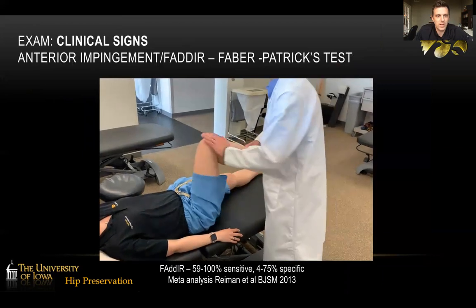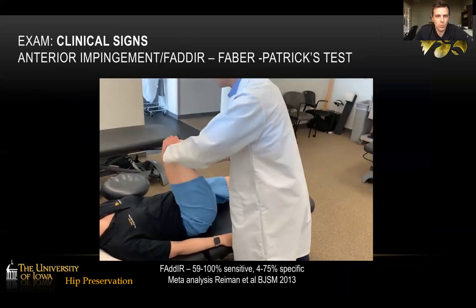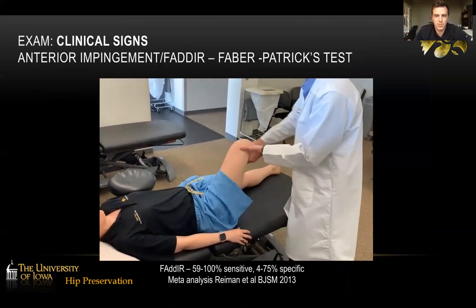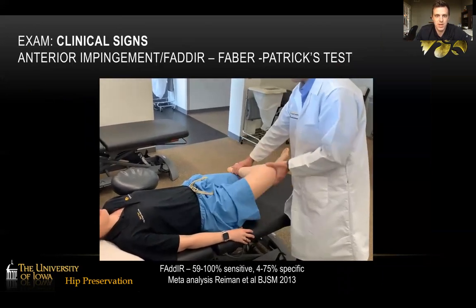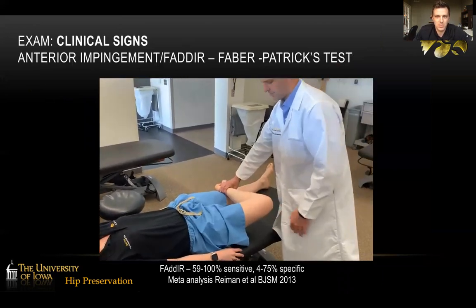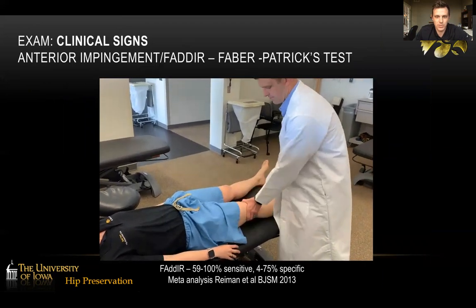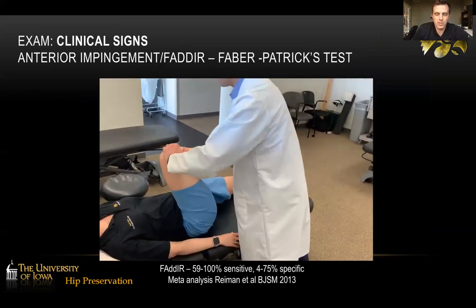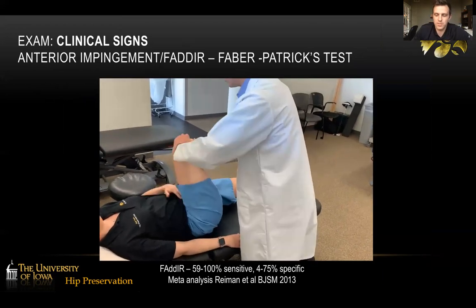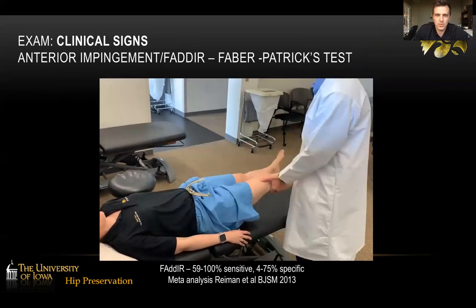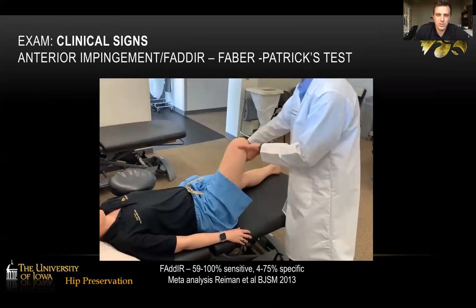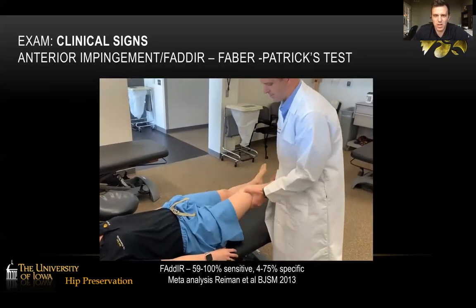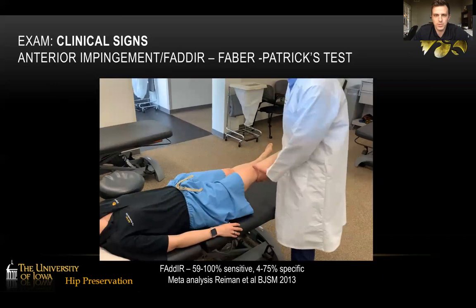The clinical signs — the anterior impingement test is the workhorse, which is the flexion, adduction, and internal rotation test, and that should reproduce the patient's symptoms. We also use Patrick's test, which is flexion, abduction, and external rotation. If pain refers to the front of the hip with the FAI test, it's a positive for hip. But if you bring the knee out to the side and pain refers to the back, you should be thinking SI joint or posterior hip issues.